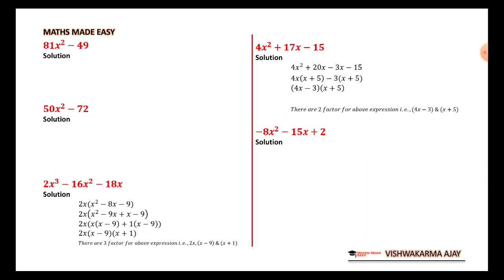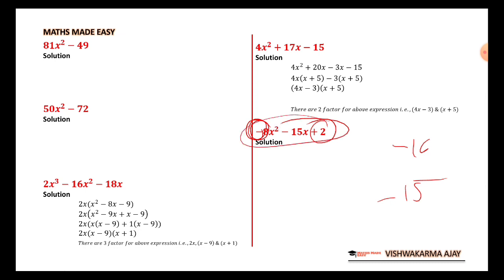For 8x² - 15x + 2, do it in a similar way: multiply 8 by 2 to get 16, then find numbers that multiply to -16 and add to -15. You can also multiply the entire equation by -1 to make it a little easier, but either way it works the same.